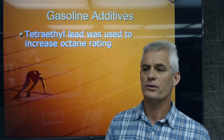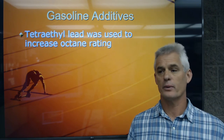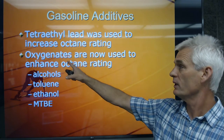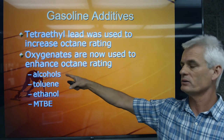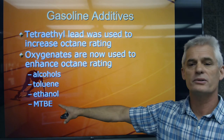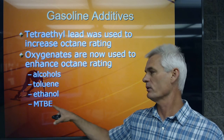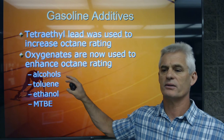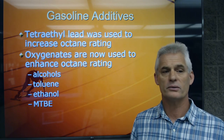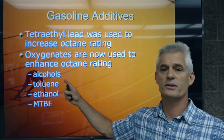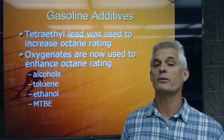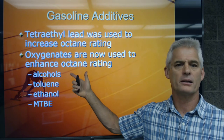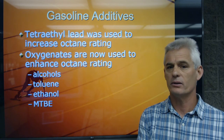Tetraethyl lead used to be a chemical we put in gasoline to raise the octane rating. It was a significant pollutant, so we removed it in the mid-70s. Now we use oxygenates — different types of alcohols, toluene, ethanol — and we used to use MTBE, methyl tertiary butyl ether, but we stopped because it was getting into the water table. One consequence of running alcohols in fuel is it's really hard on rubber lines — they dry out, crack, and eventually leak. So all automotive manufacturers have gone to synthetic plastic lines or stainless or galvanized steel fuel lines.